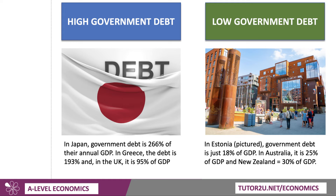Japan and Greece have high government debt. What about countries where debt is much lower? I've chosen three countries. Estonia — I can see the beautiful architecture of the Rotterman district in Tallinn, the capital of Estonia. In Estonia, government debt is 18% of GDP. Before the pandemic it was actually less than 10%, so it's nearly doubled, but it's still a very low share of GDP. In Australia, government debt is 25% of GDP. And in New Zealand, it's 30% of national income — one third of the level of debt of the UK.